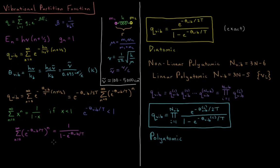Taking that sum and multiplying it by the factor we pulled out, our vibrational partition function for a diatomic molecule is equal to e to the minus vibrational temperature over 2T, divided by 1 minus e to the minus vibrational temperature over T. Under the harmonic oscillator approximation for a given diatomic molecule, this is actually exact. It won't be exact for real molecules because they're not perfectly harmonic springs, but under the harmonic oscillator approximation, this is the exact partition function.